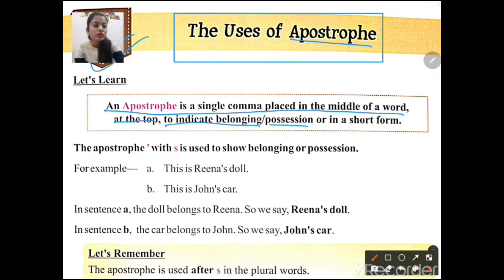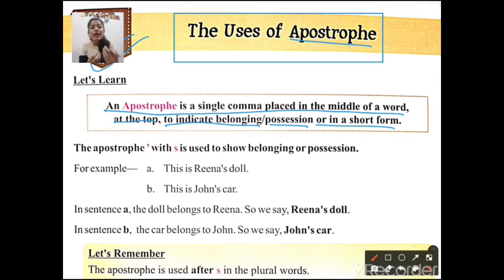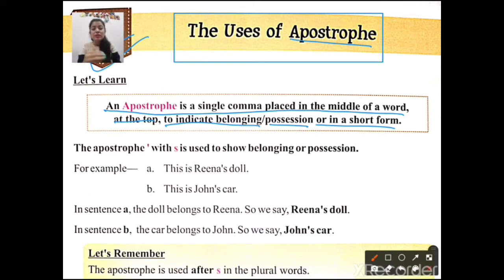So why do we use an apostrophe? We use apostrophe 's to indicate belonging or possession — that means to show who the owner is, who the malik is of a particular thing. When we use apostrophe 's, it means ownership: who the owner of a particular thing or person-related item is.